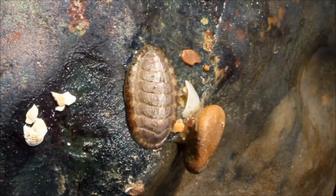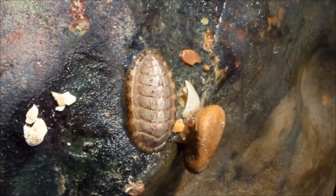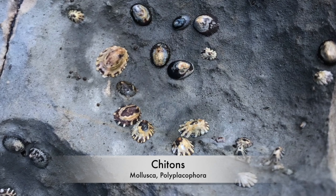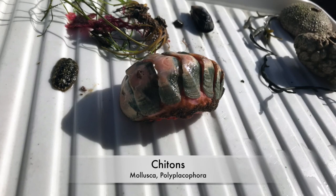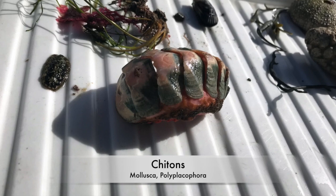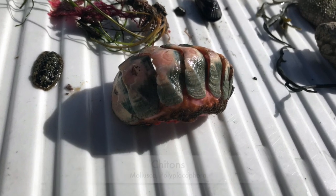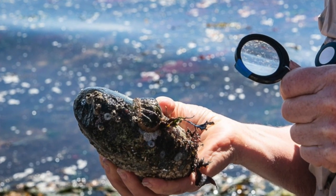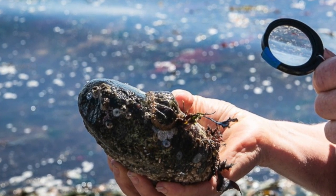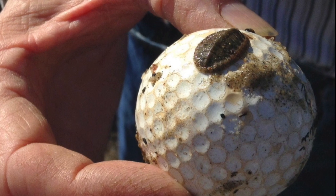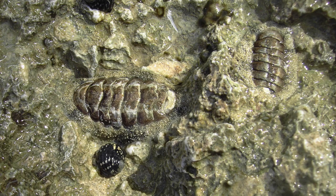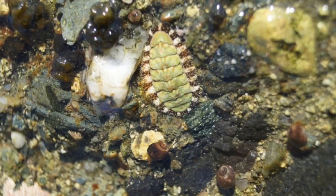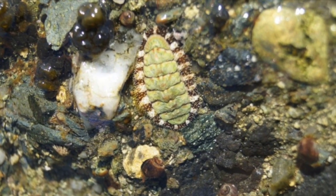Chitons use their foot to move along rocks and feed on different types of algae like red and brown algae. Chitons can range in size from 2 cm to 33 cm. The largest species is the red gumboot chiton. For protection, chitons have evolved to survive on rocks that aren't submerged, which is beneficial during low tides. They also cling tightly to rocks, especially during strong currents. Chitons are hard to spot and easily blend in with the rocks, which is a good way to avoid predators like seagulls, sea stars, and lobsters.